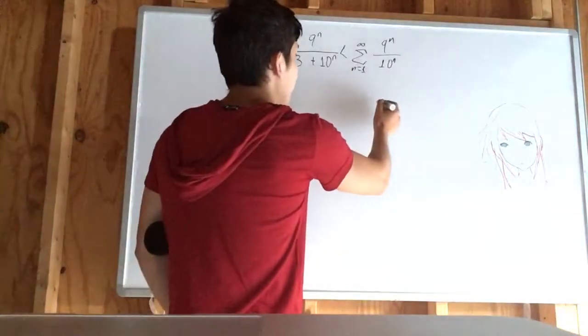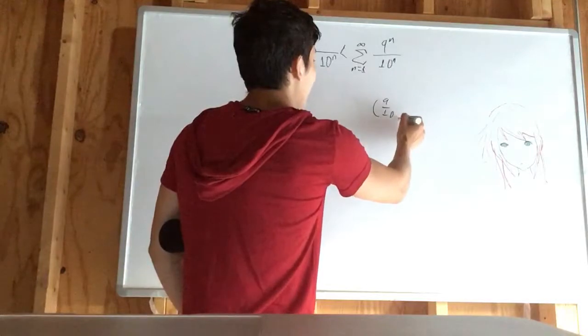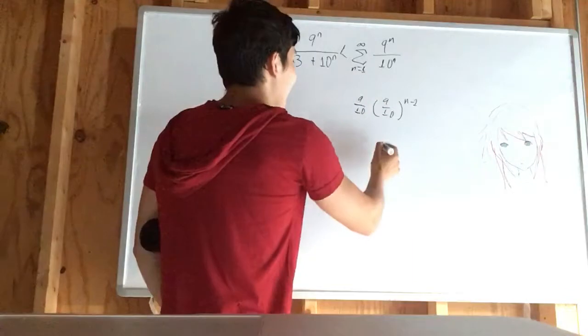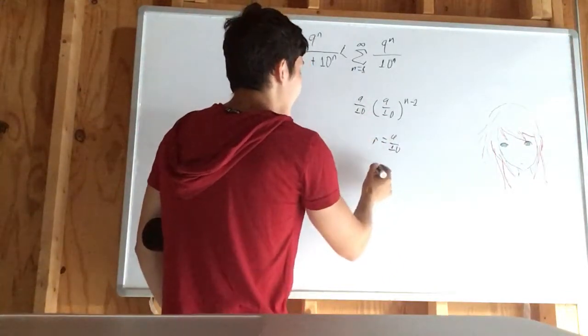Now we can notice that this is a geometric series with 9 to the 10, n minus 1, and 9 tenths. r is 9 tenths, and that is less than 1.